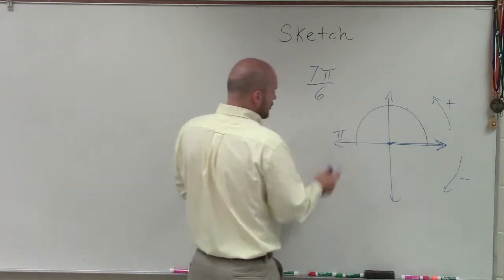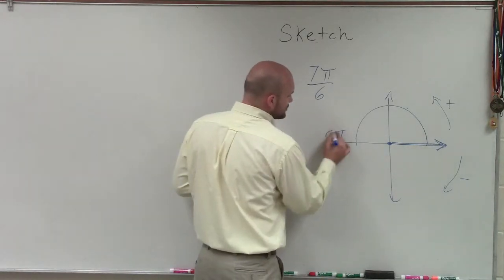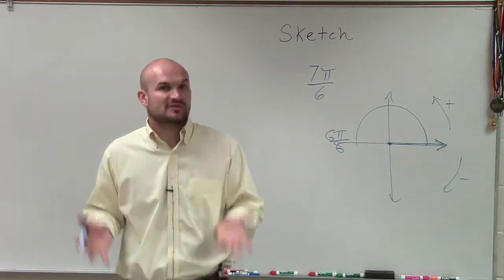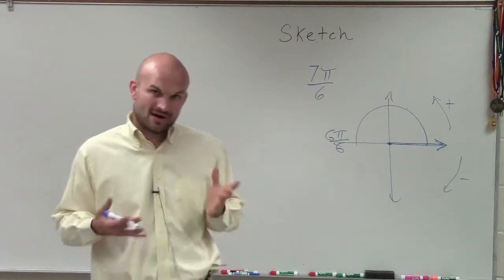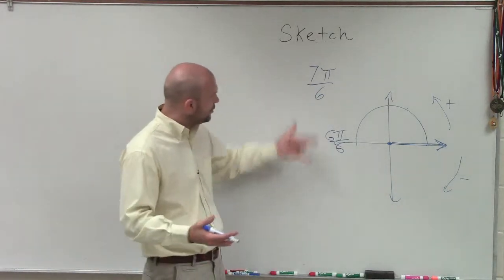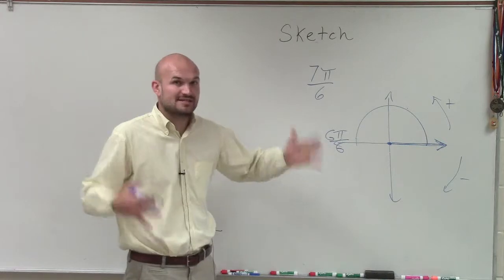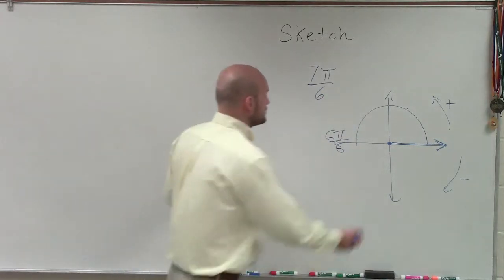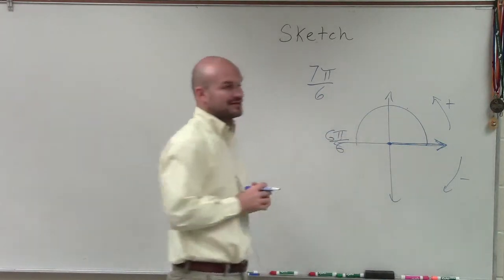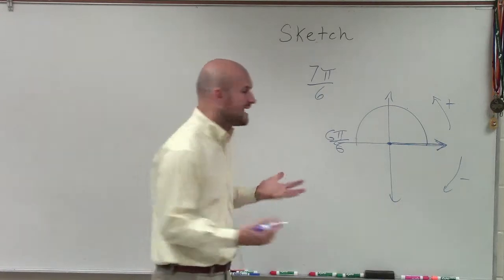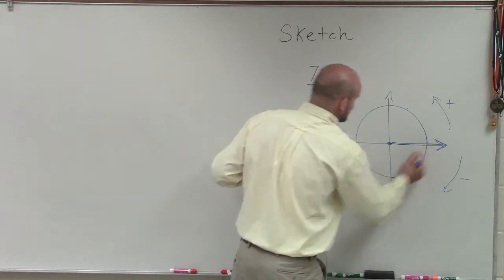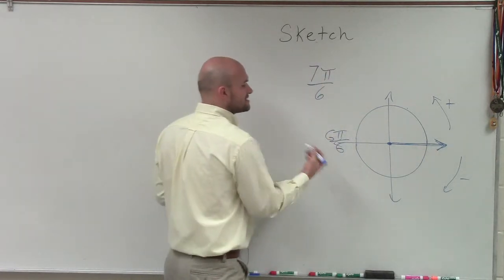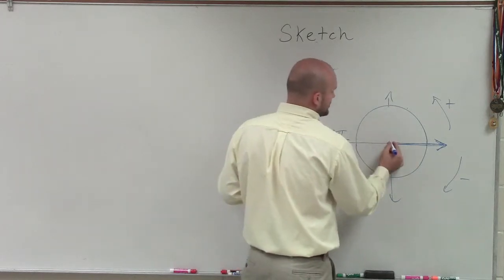7 pi over 6 is greater than a whole. So if we treat pi as a whole, we could treat it as the same denominator as 6 pi over 6. Think of pi as a whole — 7 pi over 6 means you have something greater than pi. So our angle is going to be larger than halfway around the circle. To determine how large it's going to be, I like to use 6 pi over 6 because I want to break this up into thirds.